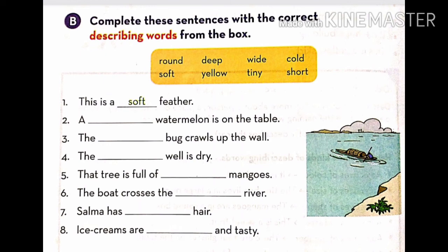Seventh, Salma has dashed hair. Salma has short hair. Last one. Ice creams are dashed and tasty. Ice creams are cold and tasty.